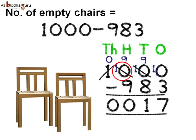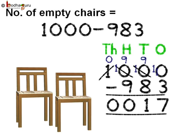Now the hundreds place becomes 10 after borrowing from the thousands place. But the tens place also needs to borrow from the hundreds place, so the hundreds place after giving 1 to the tens place becomes 9. Coming to the tens place, it also needs to lend 1 to the ones place, so the tens place becomes 9. And the ones place after borrowing becomes 10.